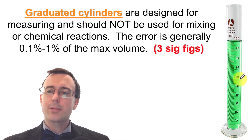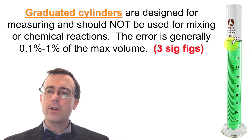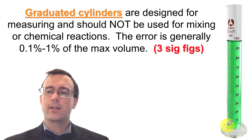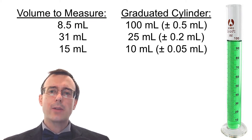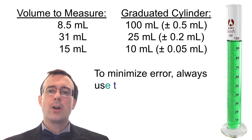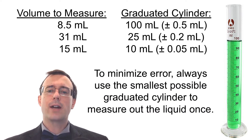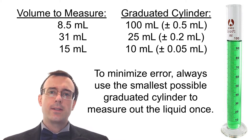Graduated cylinders should all be calibrated. Someone puts in a certain volume and uses that to determine exactly where to print the numbers, so those numbers are based on the actual volume inside that cylinder. When using a graduated cylinder, always use the smallest possible graduated cylinder to measure out the liquid in one measurement — this minimizes the error of your volume measurement.